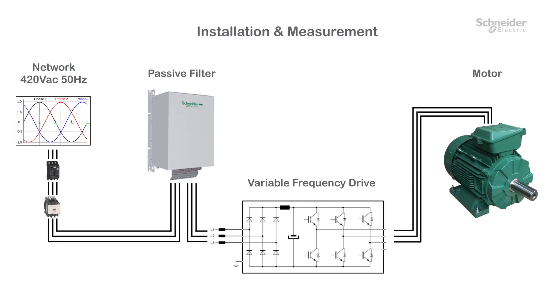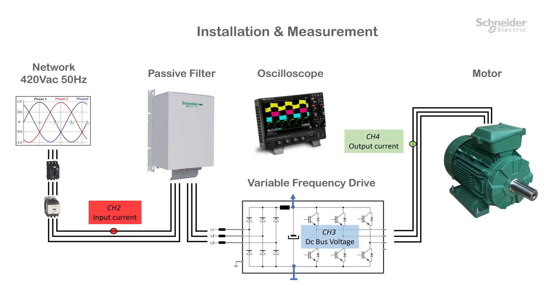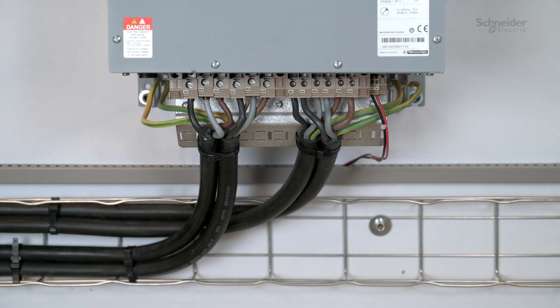Now we will add the passive filter to the installation. We keep the same measuring points for the following records: input current, DC bus voltage after the rectifier, and output current. The passive filter just needs to be connected upstream to the drive. You can download the ATV passive filter's instruction sheet on www.se.com.